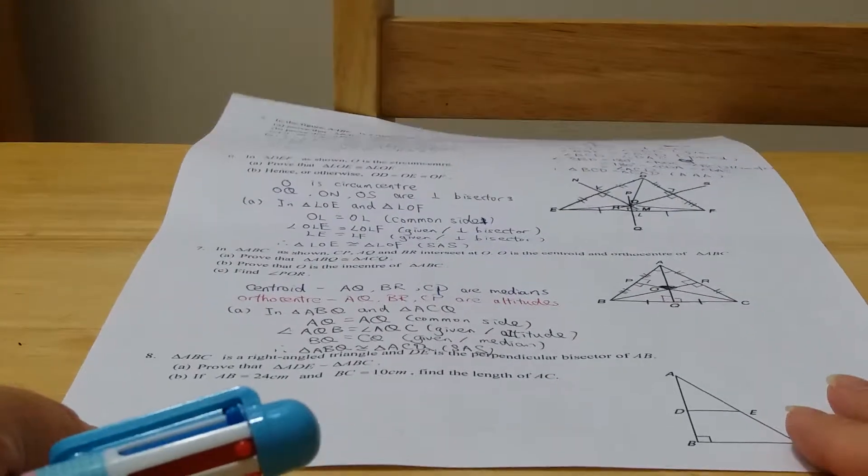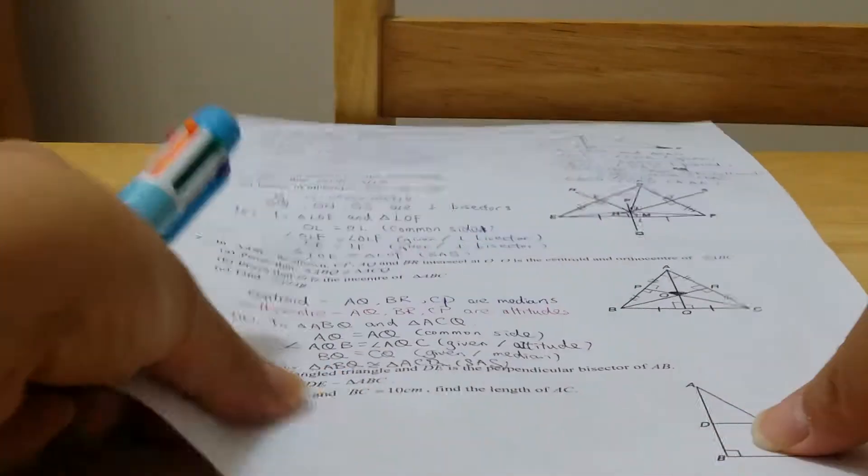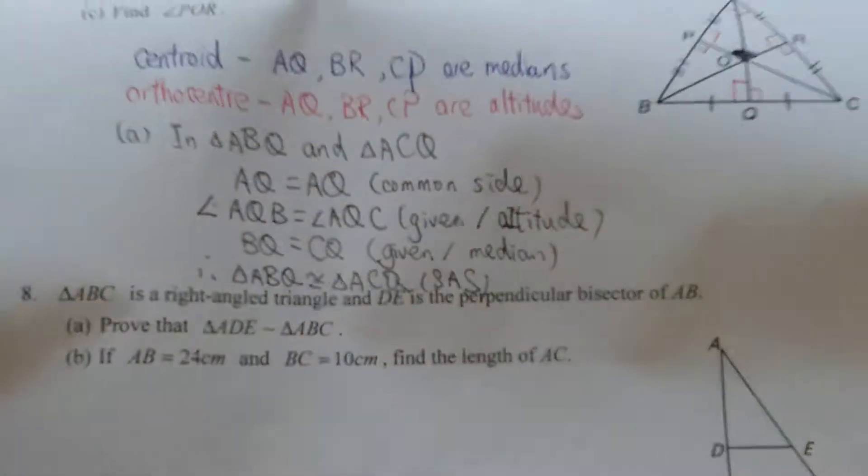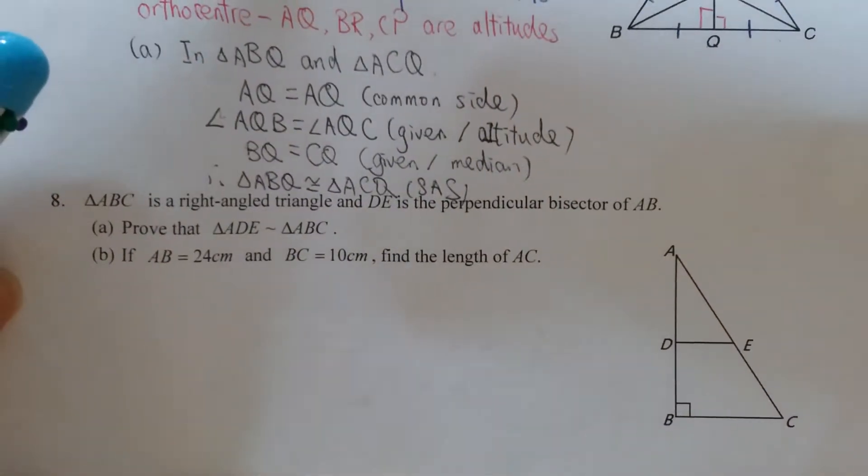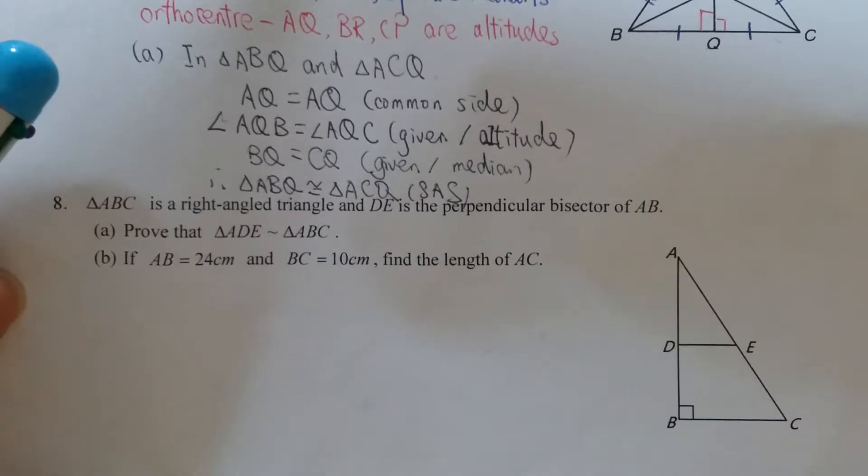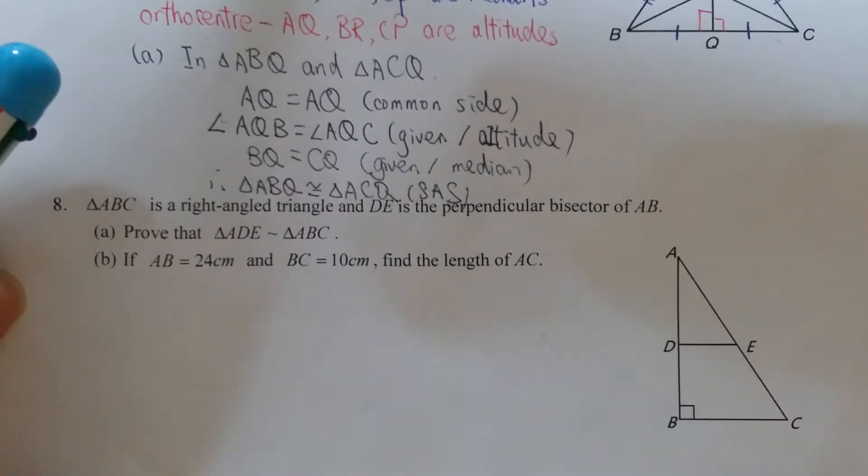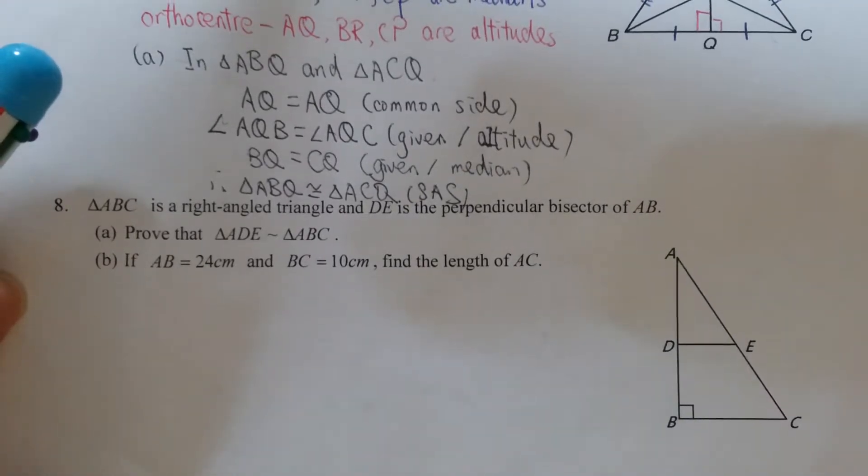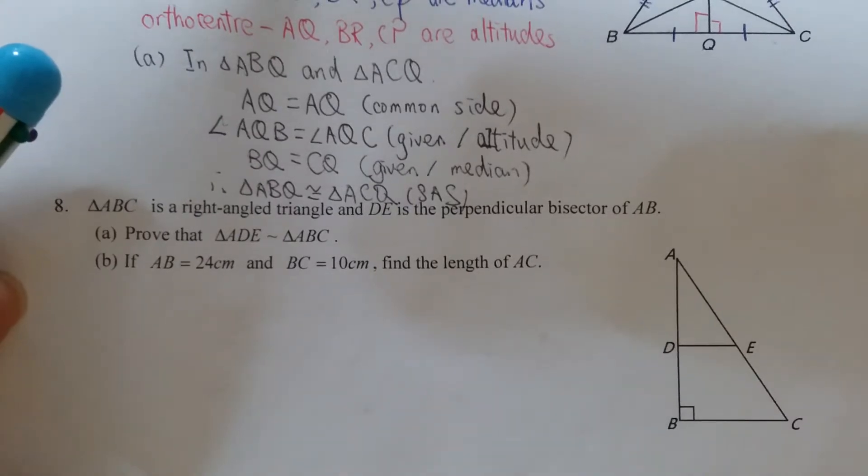That is question 8. Let's have a look. Triangle ABC is a right angle triangle and DE is the perpendicular bisector of AB. So first of all, what is perpendicular bisector of AB?